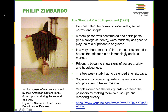Philip Zimbardo's Stanford Prison Experiment took place in 1971 in the basement of Stanford's psychology department. Male participants were randomly assigned to either the role of prisoner or guard. The experiment was supposed to last two weeks, but because things became so abusive — prisoners experienced mental breakdowns from the torment of the guards — the experiment only lasted six days.